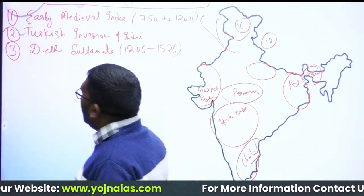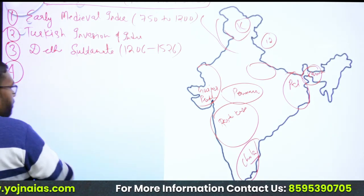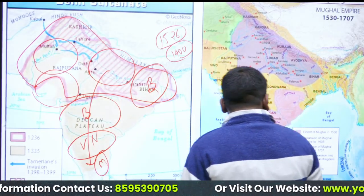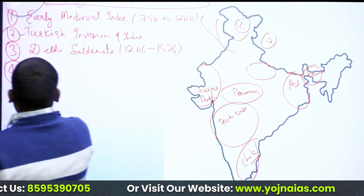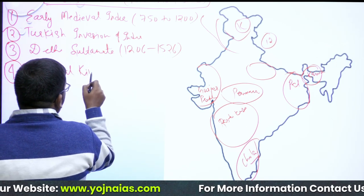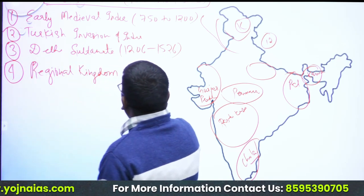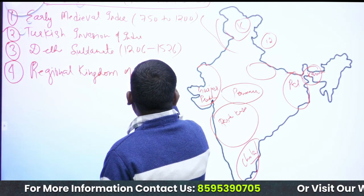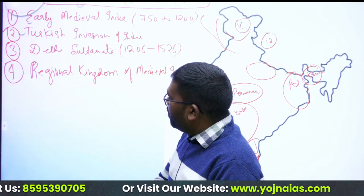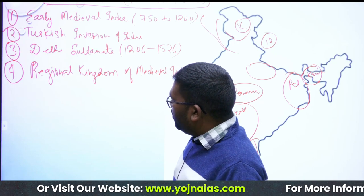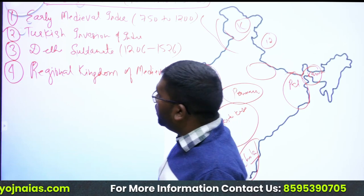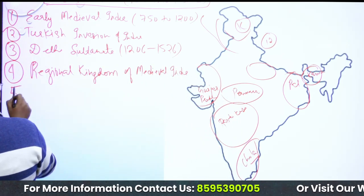Chapter four will be the regional kingdoms of medieval India. All these kingdoms that became independent are discussed here — Bengal, Awadh, Malwa, Gondwana, the Bahmani kingdom, and the Bijapur kingdom. These are the major kingdoms discussed in chapter four.